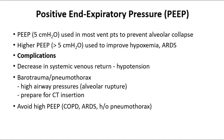In general, we want to avoid high PEEP, but sometimes it's necessary. There are other types of ventilation: airway pressure release ventilation (APRV), where the expiratory phase is longer than the inspiratory phase, though it can cause more pneumothorax and barotrauma. And high-frequency oscillatory ventilation, which keeps PEEP almost constant but also increases the risk of pneumothorax and barotrauma.